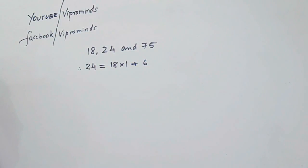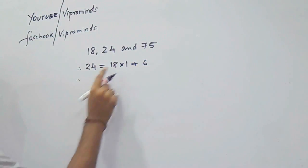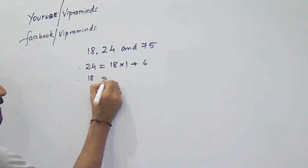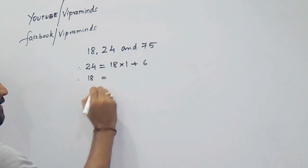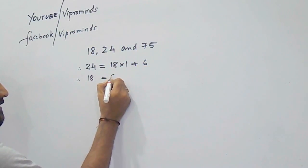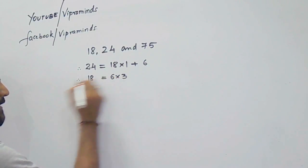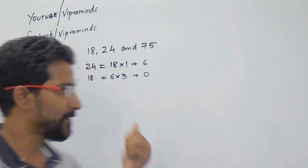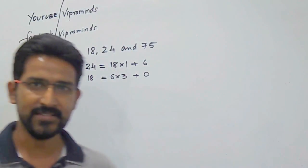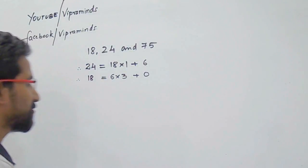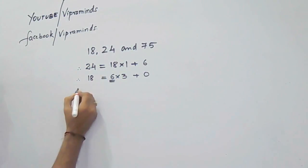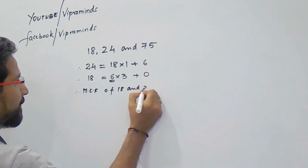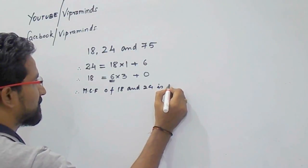We carry out this process until we get remainder 0. From divisor and remainder, 18 is now the dividend and 6 acts as the divisor. 6 into 3 is 18, so the remainder is 0. When the remainder is 0, the divisor is the HCF of those 2 numbers. Here divisor is 6, therefore HCF of 18 and 24 is 6.